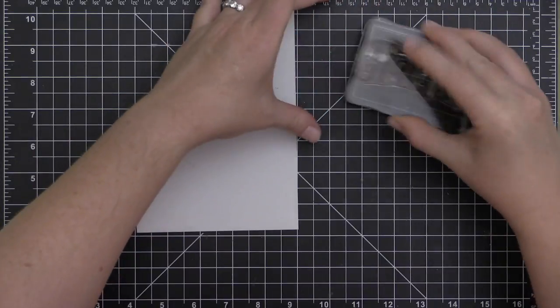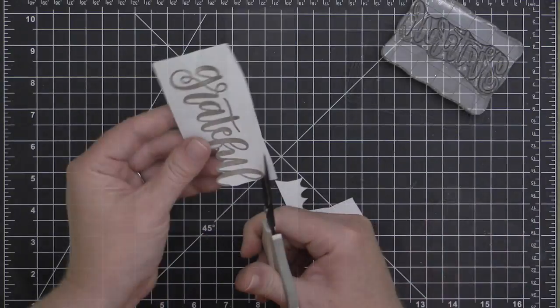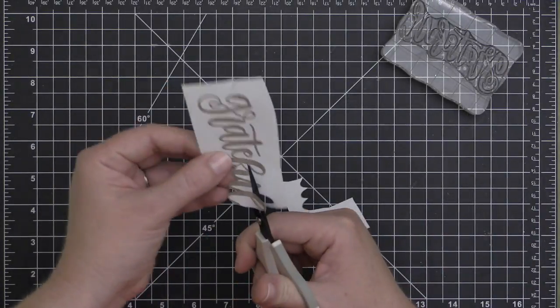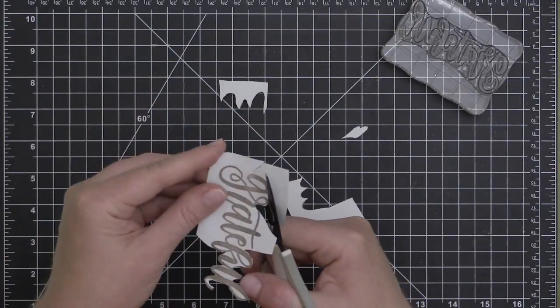I'm starting out with my Grateful stamp and I'm just inking it up in any old ink and stamping it onto some Inkadinkado stamp masking paper. You're going to notice as I cut this out that I am selectively cutting out what I am going to use here.